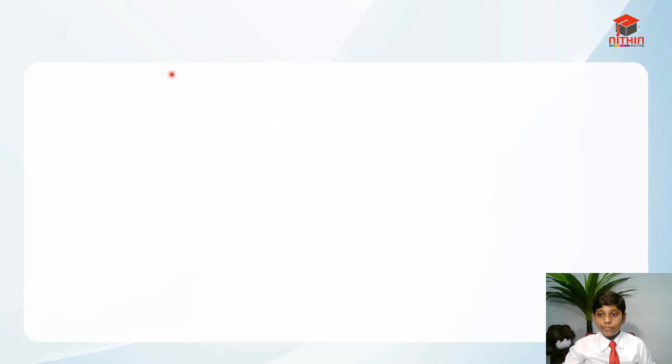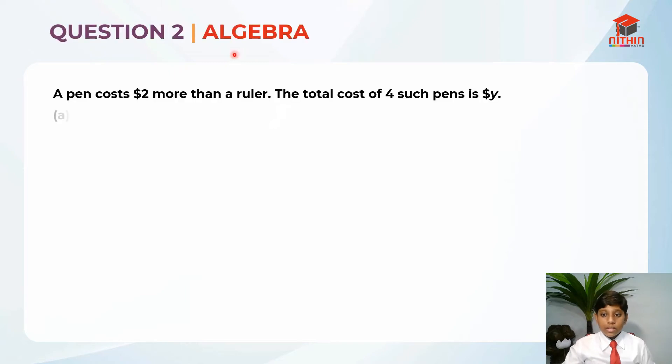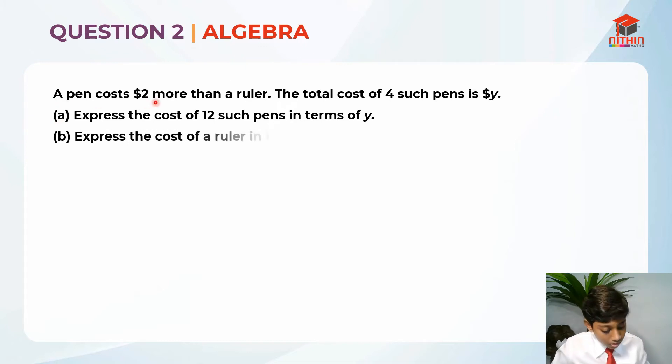This is question 2. This question is testing us on algebra. Let's read the question first. A pen costs $2 more than a ruler. The total cost of 4 such pens is Y dollars. Part A, express the cost of 12 such pens in terms of Y. Part B, express the cost of a ruler in terms of Y.